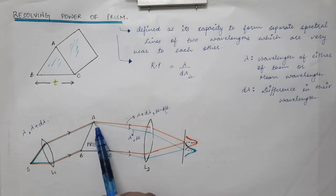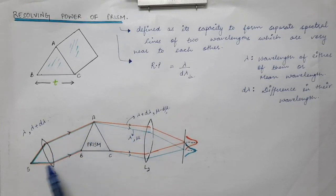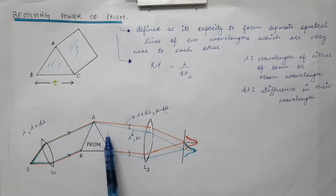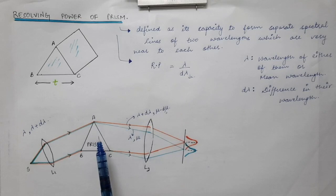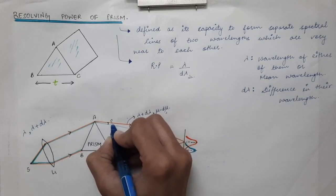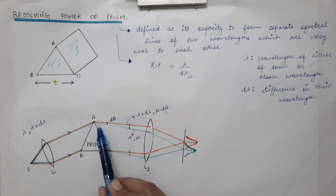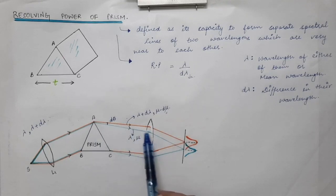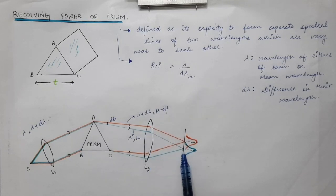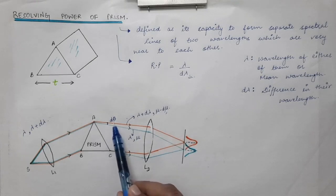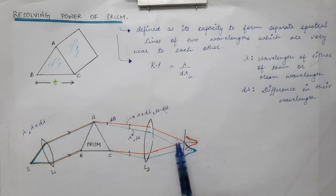The two light rays coming from the same source change their paths after being refracted by the prism. The angle between the two emergent rays is denoted d_theta. This d_theta is the angle such that when the rays fall on the second converging lens, they converge so that the maxima of one falls on the first minima of the other, satisfying the Rayleigh criterion.